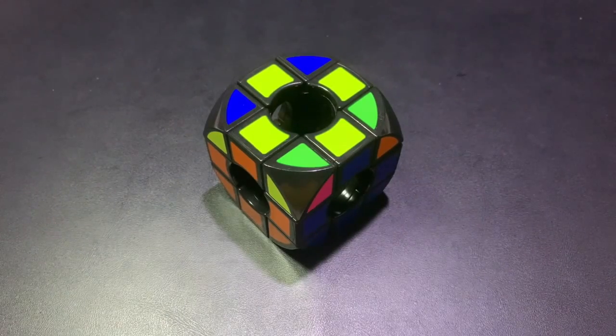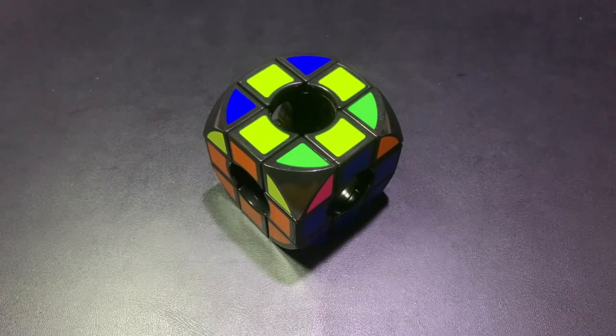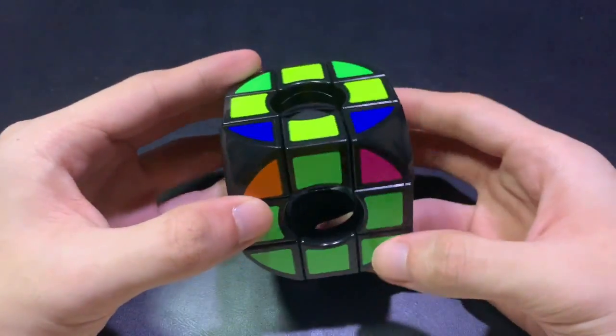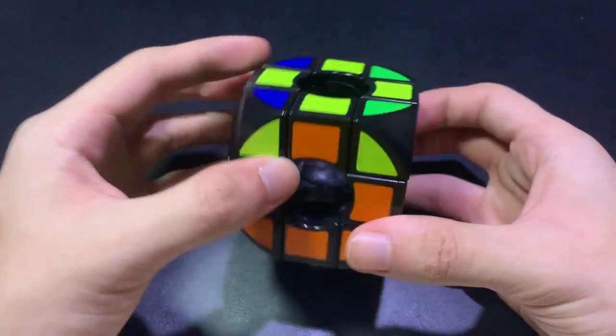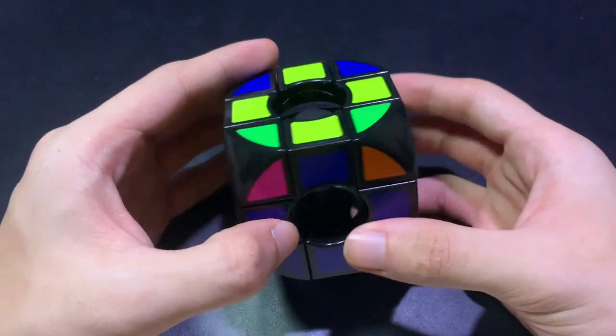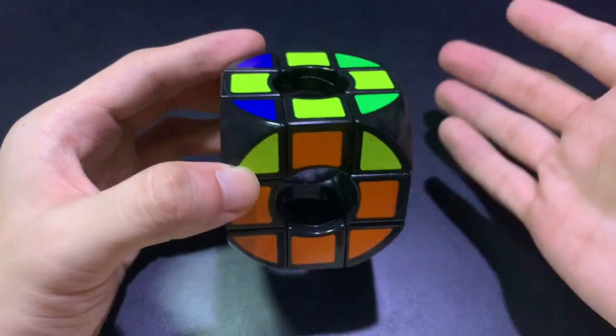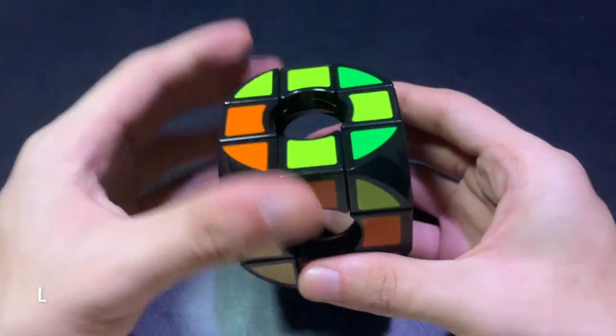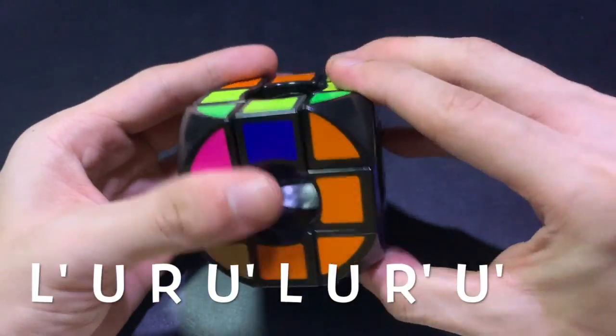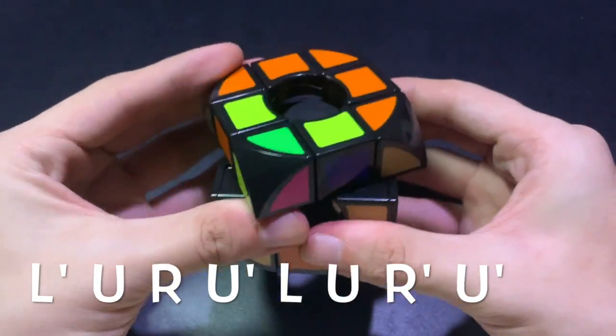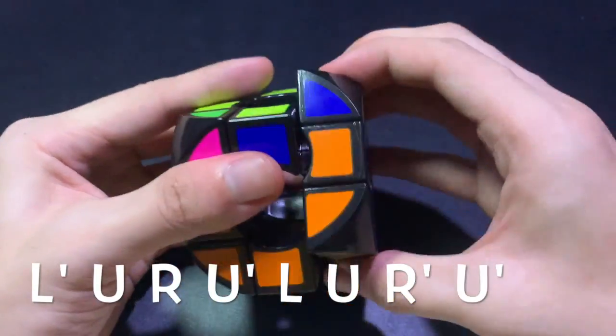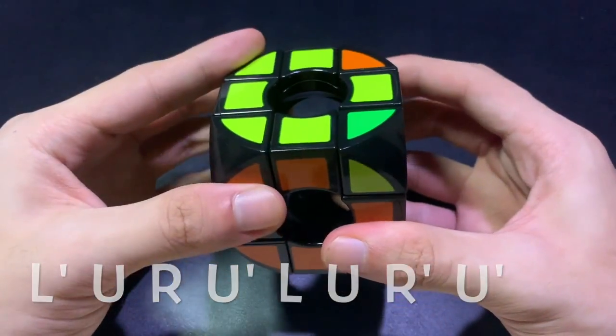The last step is to put the corners in the right places and to orient them correctly. So like the three by three, we have to make sure that at least one piece is in its correct place. Well, since there's none, let's do the algorithm in any phase and it goes like this. So it's l prime, u, r, u prime, l, u, r prime, and u prime.